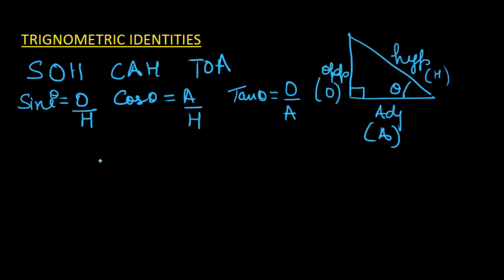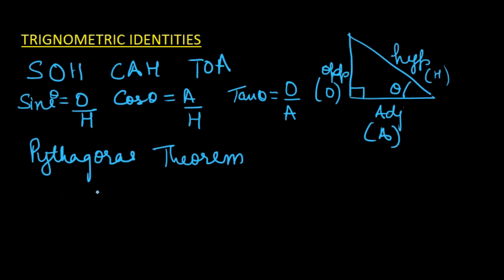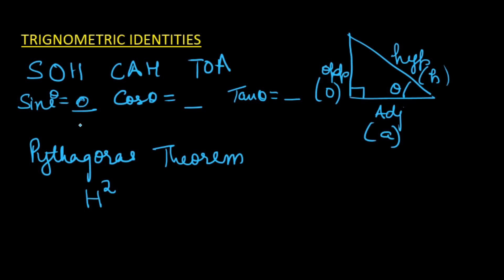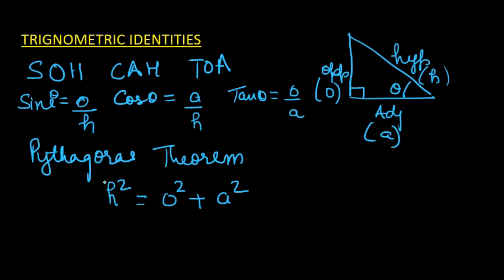Now, all these three sides — the adjacent, the opposite, and the hypotenuse — of a right angle triangle are related to each other by the Pythagoras theorem. Pythagoras theorem says that the square of the hypotenuse is equal to the sum of the squares of the opposite and adjacent: h² = O² + A². We will be using this theorem to prove the trigonometric identities.